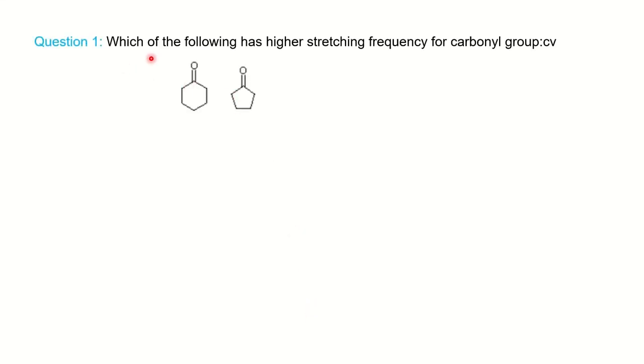Another question based on the same concept from a previous year: Which of the following has higher stretching frequency of the carbonyl group? Here again, two molecules are present, one with a six-membered ring, the other with a five-membered ring. We can answer that the smaller ring has higher frequency because it has more s-character in the double bond.